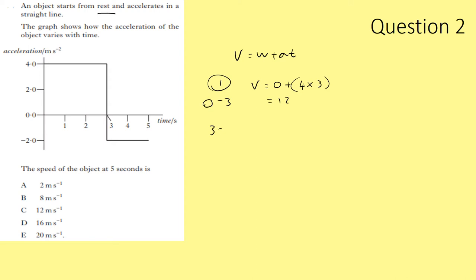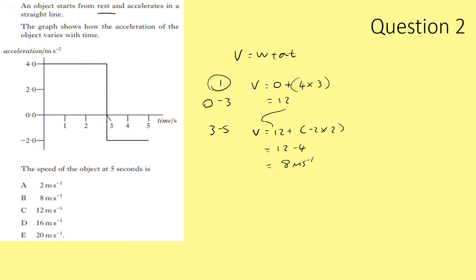From 3 to 5 seconds, 12 becomes our initial velocity. V = 12 + (−2)×2 = 12 − 4 = 8 metres per second. Answer: B.